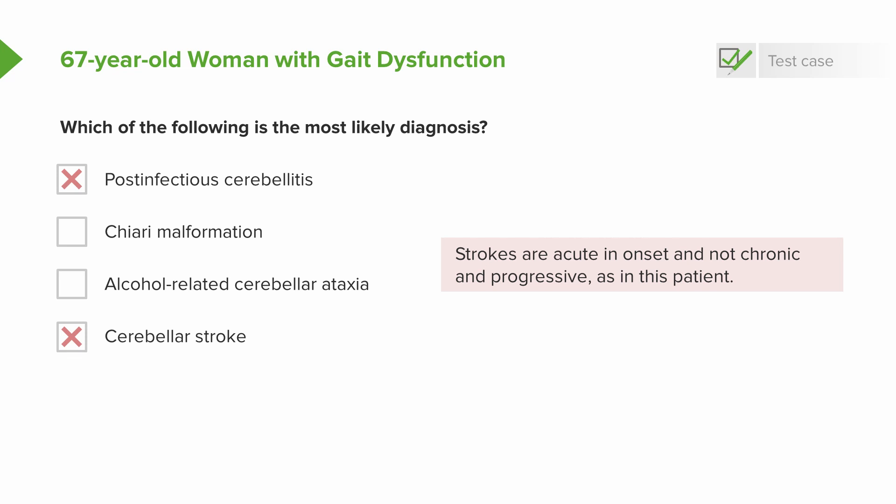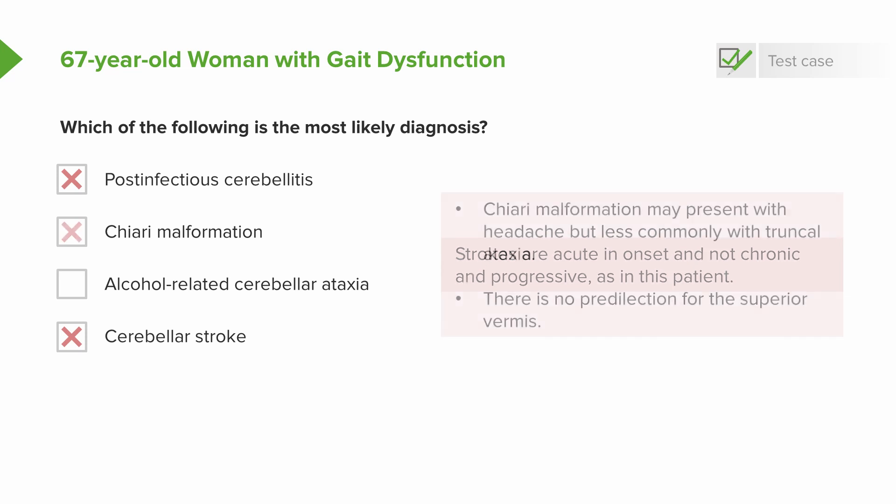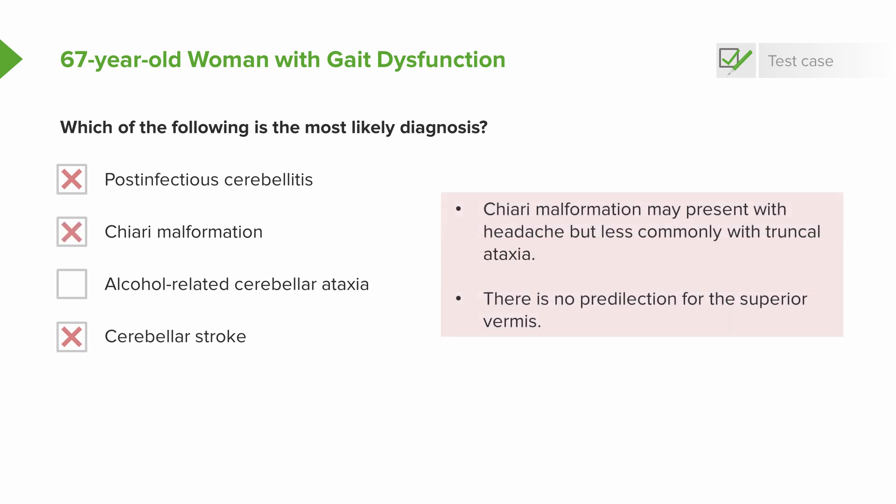Cerebellar stroke is also unlikely. Strokes present acutely, and again this patient's symptoms were chronic in onset over two years. We often see strokes affecting the lateral circumferential vessels that feed the cerebellar hemispheres, presenting with prominent appendicular dysmetria and ataxia, as opposed to vermis dysfunction. Chiari malformation often presents with headache and uncommonly presents with an ataxic syndrome — it describes cerebellar tonsils descending below the foramen magnum, which we don't see on that midline imaging cut.